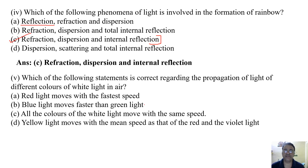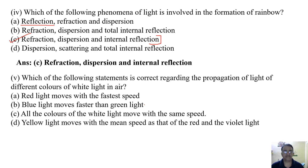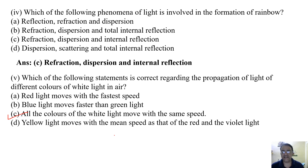The last question: which of the following statements is correct regarding the propagation of light of different colors of white light in air? Options are: red light moves with the fastest speed; blue light moves faster than green light; all colors of white light move with the same speed; or yellow light moves with the mean speed of red and violet light. The correct answer is option C — all colors of white light move with the same speed, but they have different wavelengths and different frequencies.